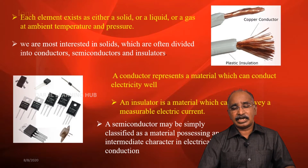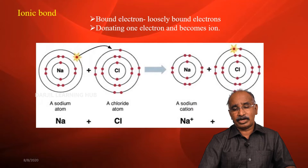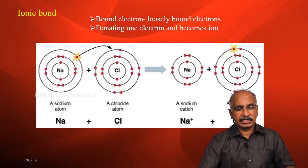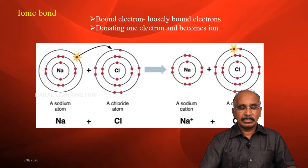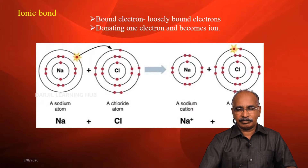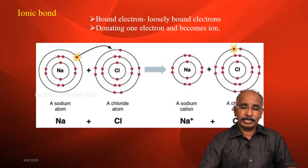In these solid materials, there are three different types of bonds. The first is ionic bonds, the second is covalent bonds, and the third is metallic bonds. These are the basic types of bonds.